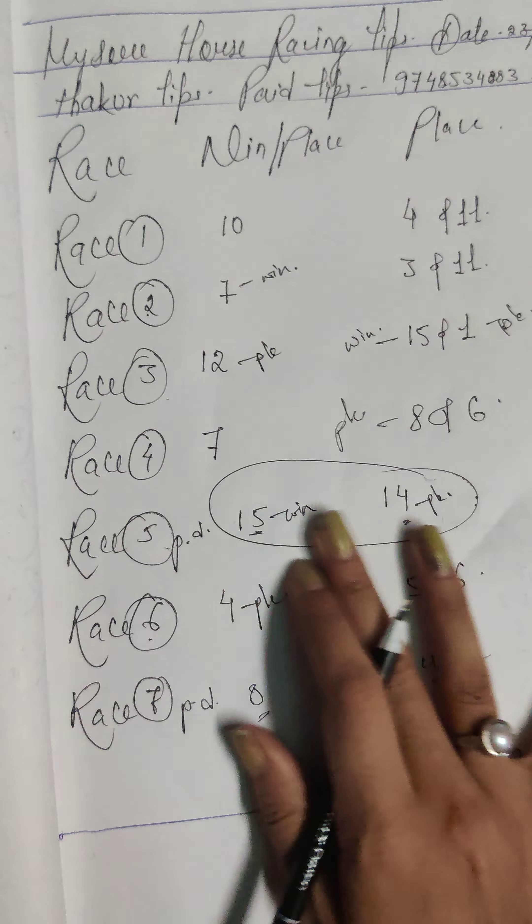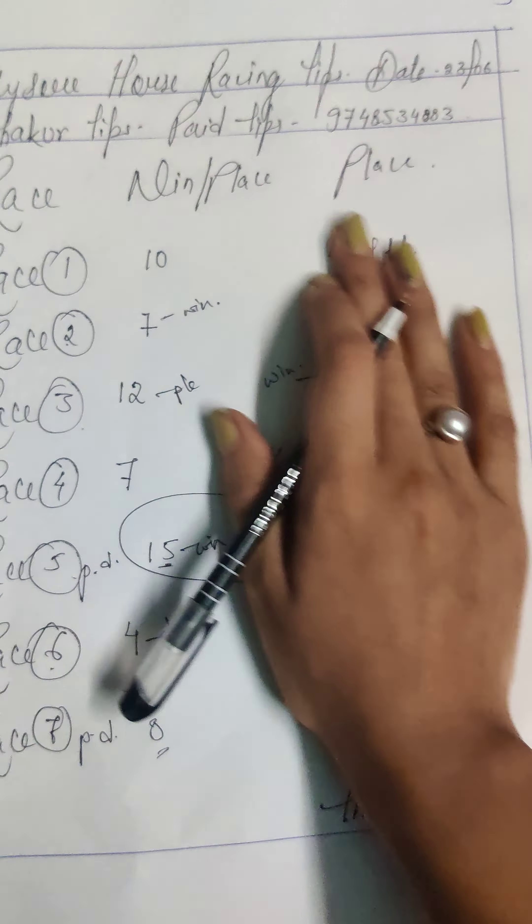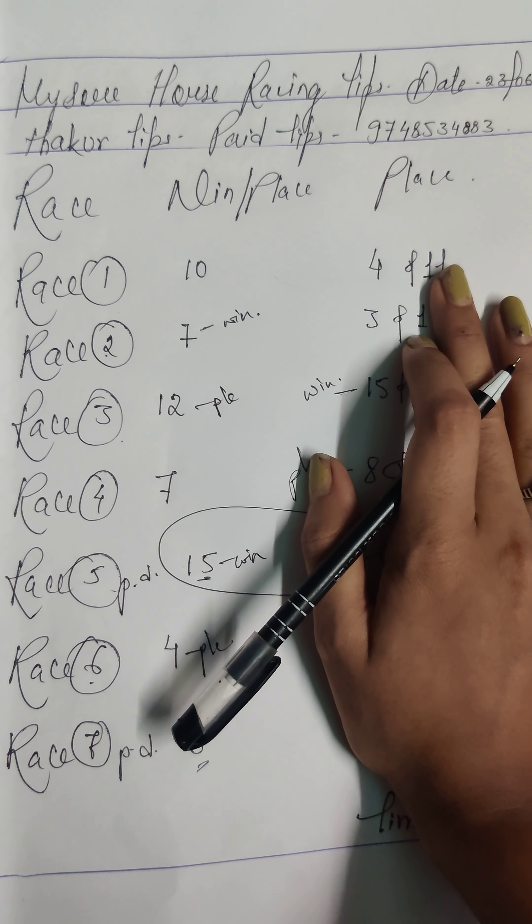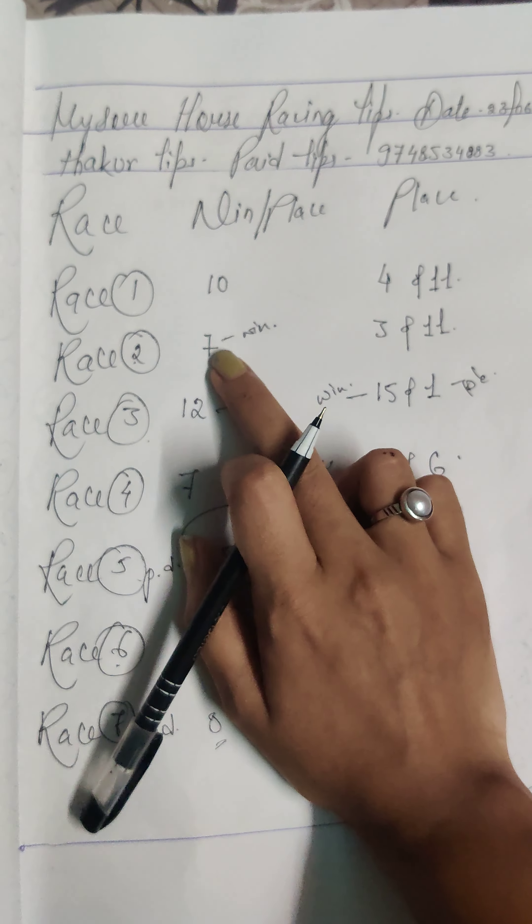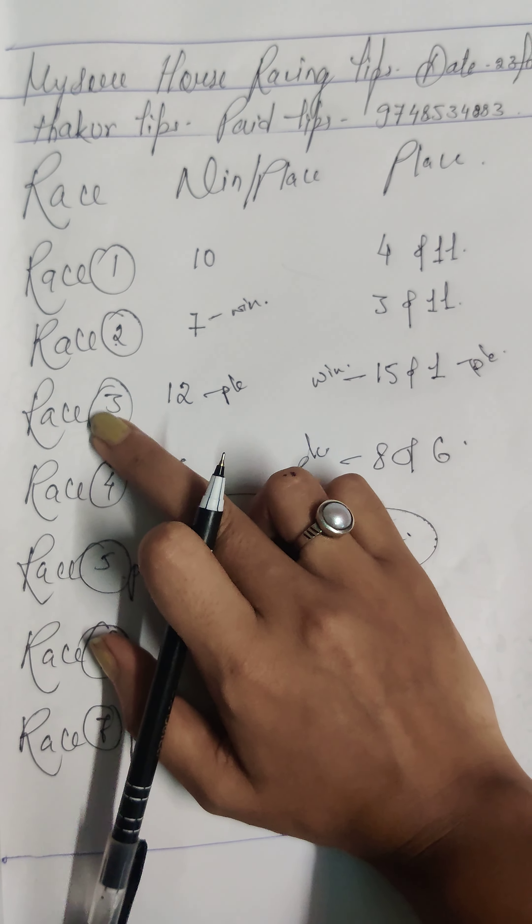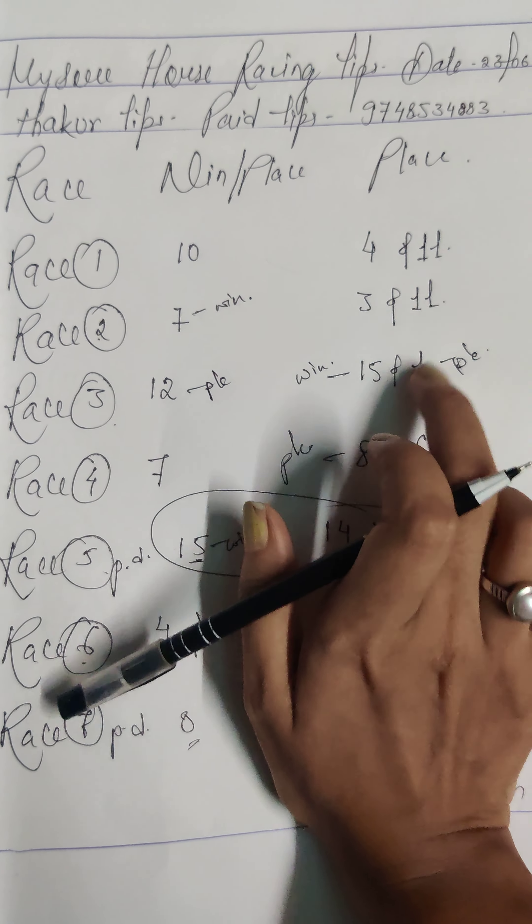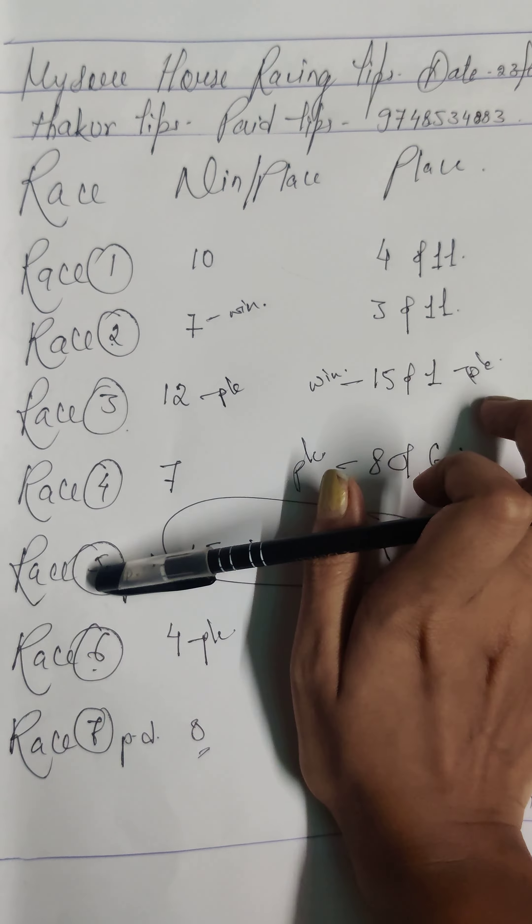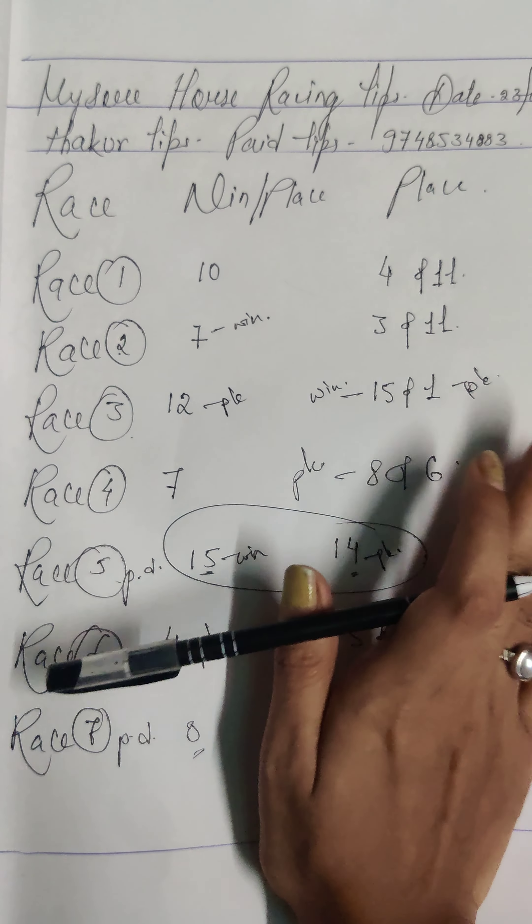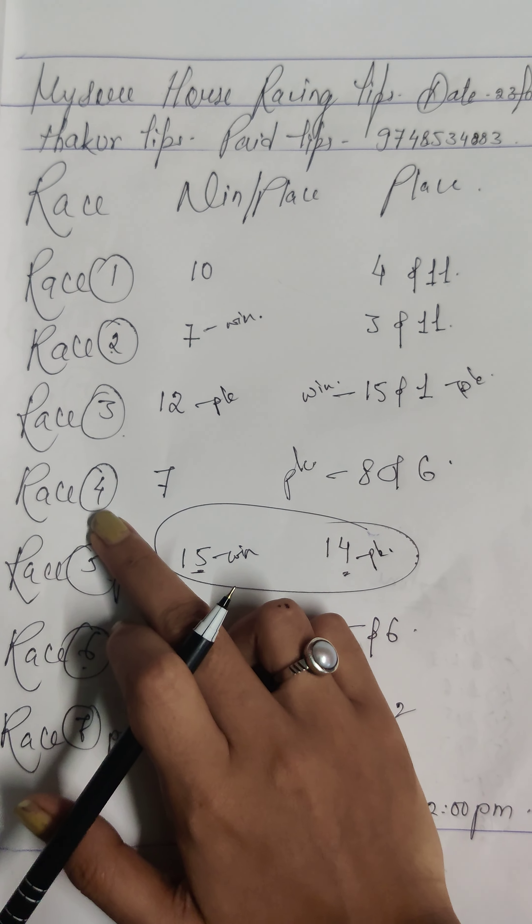First we got race 1, 7 win. Third we got race 3, 12-15-1, 15 win, 12 place and 1 place. So we got race 3. Who have followed in the second round, we got race 2, 7-8-6.